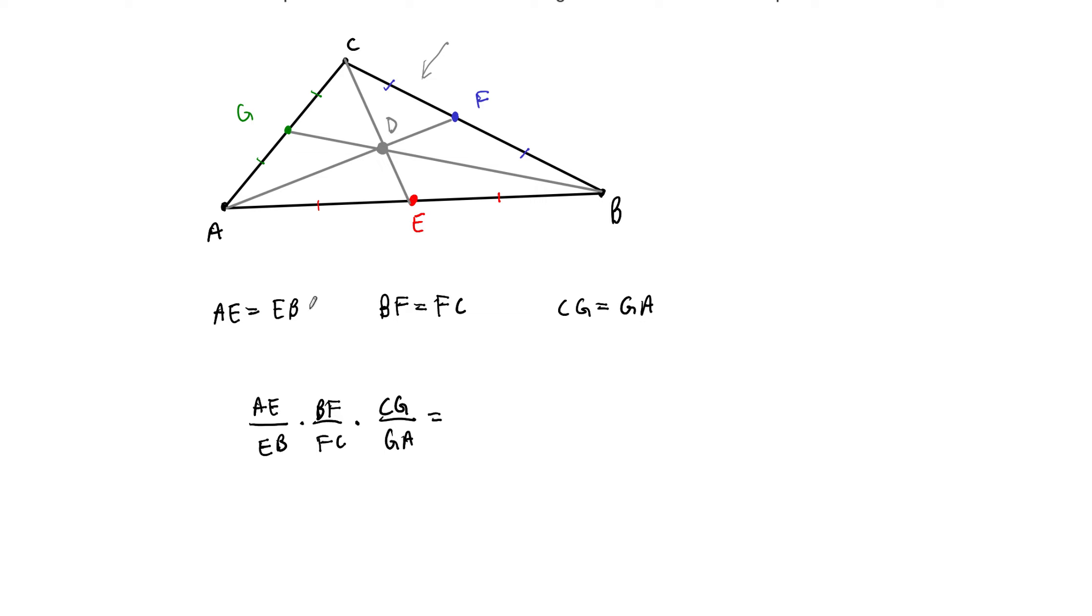So AE and EB, they're equal. So this cancels out, leaves us with 1. Same thing on the next one, BF equal to FC. That's a 1. Same thing on the last one, CG equal to GA. So that ratio is equal to 1, and this product just becomes 1 times 1 times 1.